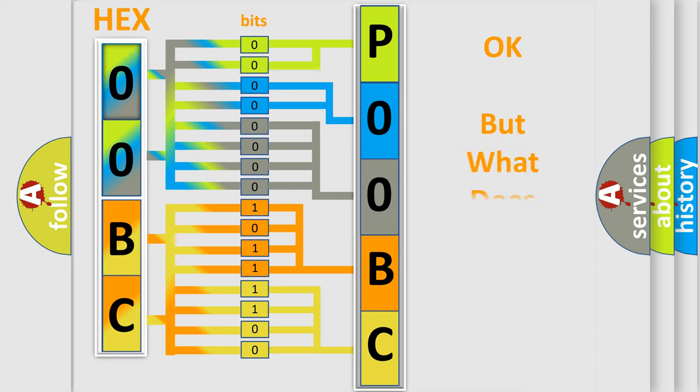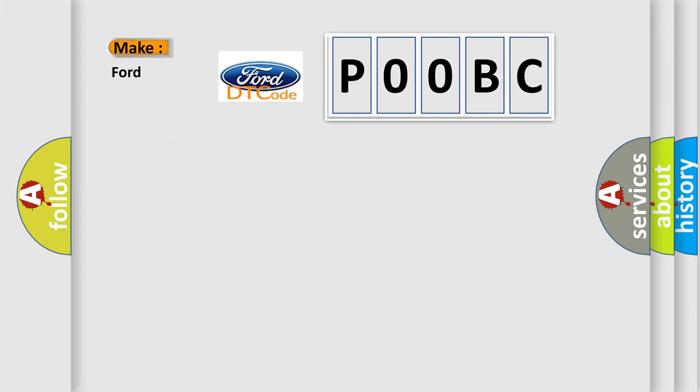The number itself does not make sense to us if we cannot assign information about what it actually expresses. So, what does the diagnostic trouble code P00BC interpret specifically?